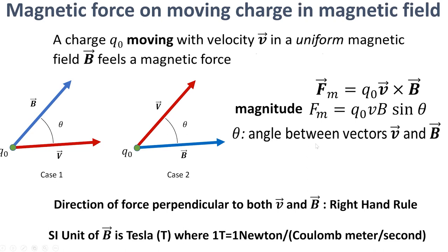Before moving on, the SI unit of magnetic field is force divided by charge divided by velocity divided by sine θ. Since sine θ has no unit, the SI unit of magnetic field — called the Tesla, written as T — is Newtons divided by Coulombs times meters per second, which equals one Newton-second per Coulomb-meter.